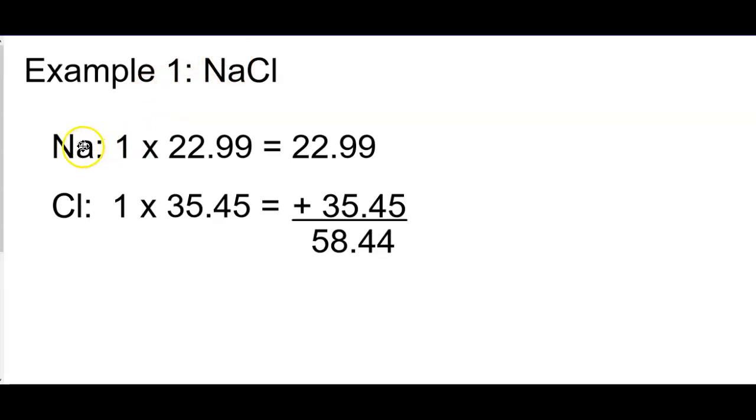To calculate molar mass, we list the atoms in the formula, how many of each atom, the periodic table number, aka molar mass, multiply across and sum. This is what we call the overall or the molar mass.